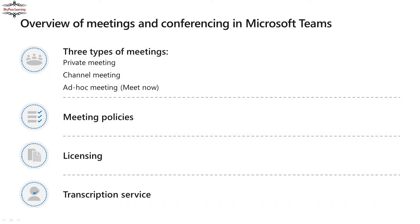We can also configure meeting policies and licensing. Licensing is mostly relevant when talking about audio conferencing — it requires an E5 plan or any add-ons in your existing subscription. Audio conferencing is not available in all regions, so you must identify whether it's available in your region. If not, you may have to take alternative approaches like integration of SBCs to achieve audio conferencing functionality.